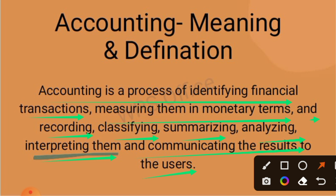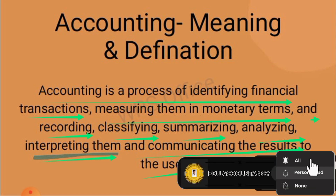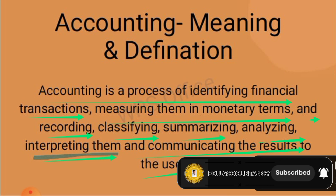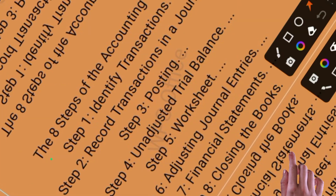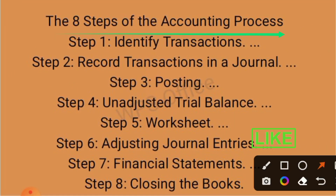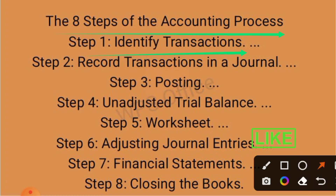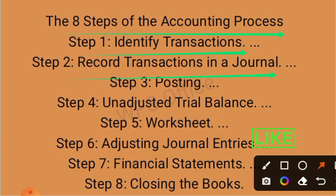Accounting is a systematic process of identifying, measuring, recording, classifying, summarizing, interpreting, and communicating financial information. Steps of the Accounting Process: 1st Step - Identify Transactions. 2nd Step - Record Transaction in the Journal.